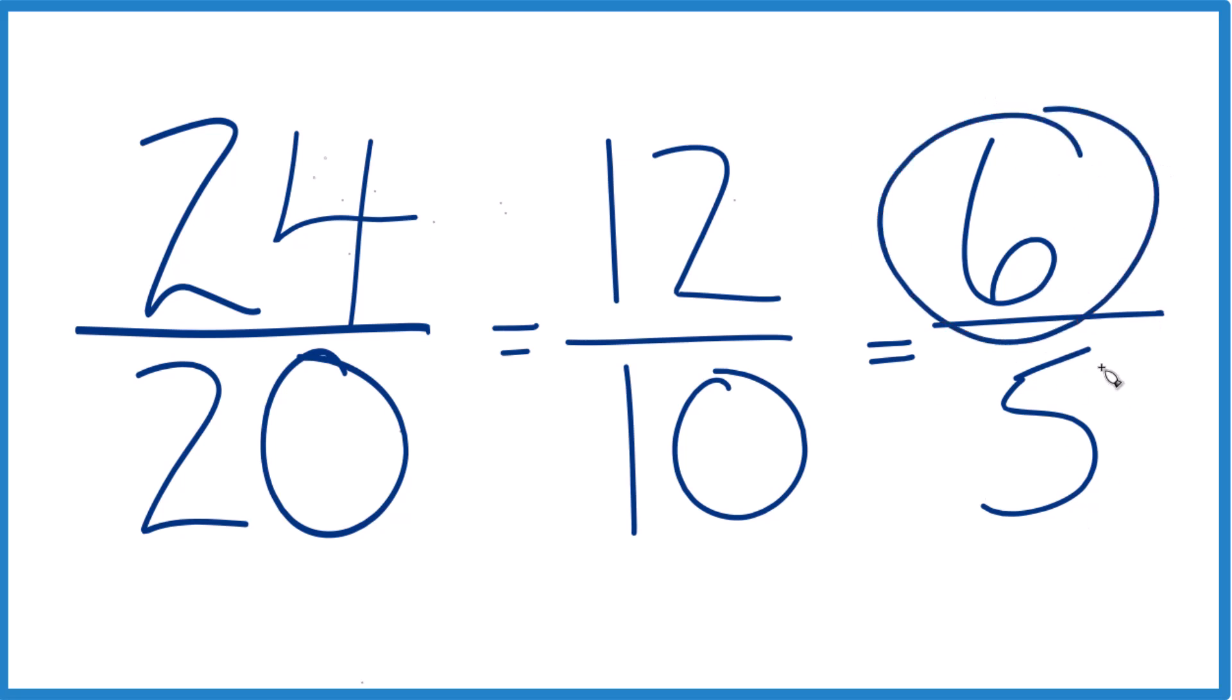The numerator, 6, is bigger than the denominator. That means it's an improper fraction. So we could write it as a mixed number as well.